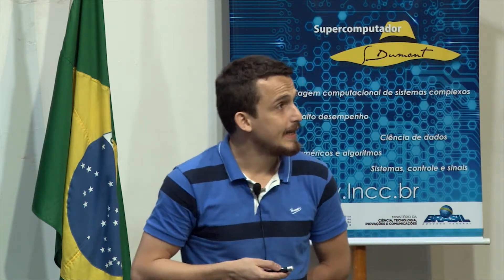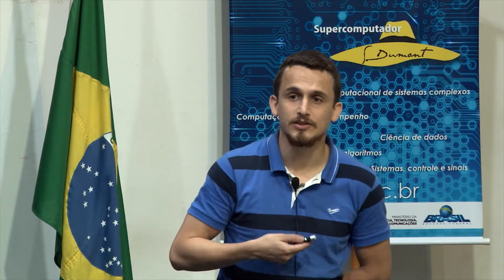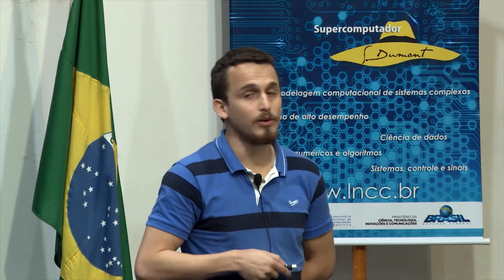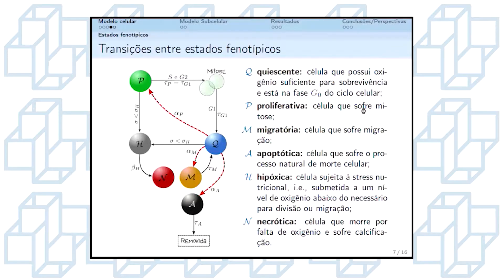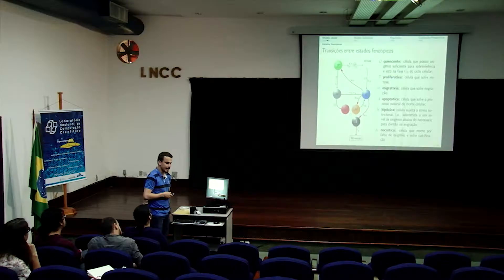As células tumorais se diferenciam entre si através de fenótipos, e pode ocorrer transições entre eles. Por exemplo, para determinar a proliferação celular: de uma célula em repouso, no estado quiescente, ela pode se tornar proliferativa e sofrer a mitose. Algumas dessas transições são modeladas de maneira determinística — as setas em preto, que em sua maioria são dependentes exclusivamente do nutriente — e as setas em vermelho representam as transições estocásticas.